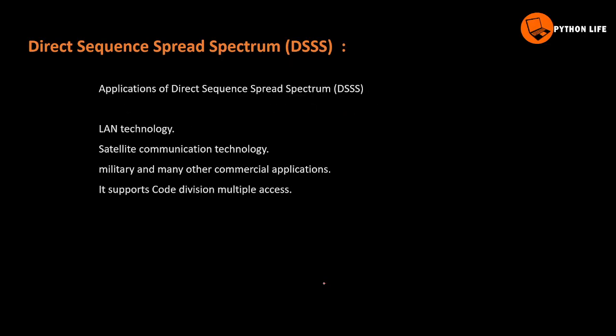These are the advantages and disadvantages of spread spectrum. Applications include LAN technology, local area networks, satellite communication, and other commercial applications. Spread spectrum also provides privacy and security. It supports code division multiple access, or CDMA.